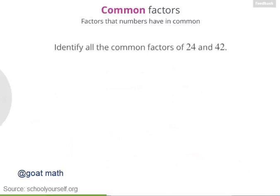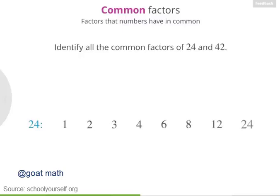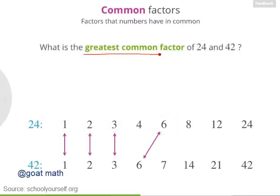Next, see if you can identify all the common factors of 24 and 42. And if you get stuck, feel free to ask for a hint. Right, so here are all the factors of 24 and here are all the factors of 42. The common factors are numbers that appear on both lists. So that's 1, 2, 3, and 6.